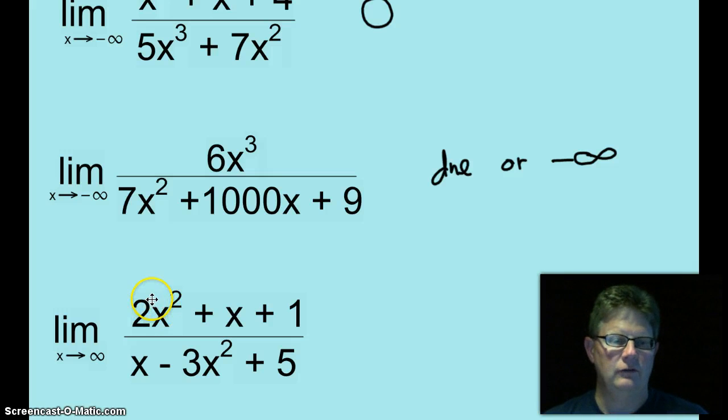This next rational function, the degree of the numerator and the degree of the denominator are again the same. So we will look at the lead coefficients and we are going to say that that limit is negative 2 thirds.